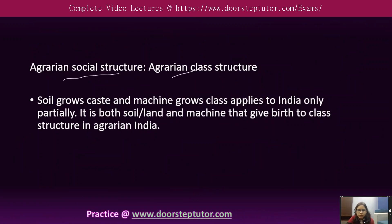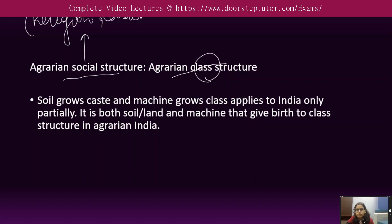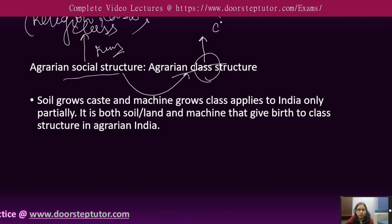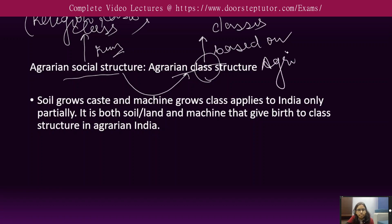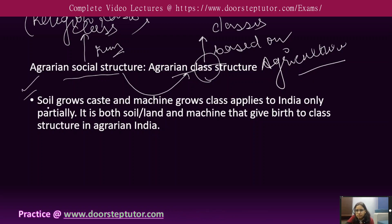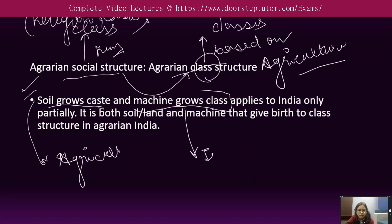Agrarian social structure and agrarian class structure also have a difference. When we talk about agrarian social structure, we talk about everything — religion, caste, class, and kinship. But when we narrow it down to agrarian class structure, we will only understand the classes based on agriculture and how they have evolved from peasant society to modern contemporary society, where agriculture is more of an enterprise now. There is a quote: 'soil grows caste and machine grows class,' with an example being industrialization.